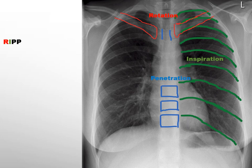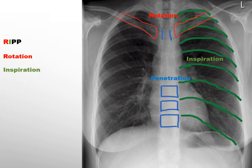RIPP is for the quality and positioning of the x-ray. Adequate rotation can be assessed by observing the clavicle heads to ensure they are equidistant from the spinous processes of the vertebral bodies. The visibility of 9 to 10 posterior ribs indicates adequate inspiration, as the image should ideally be taken during inspiration.